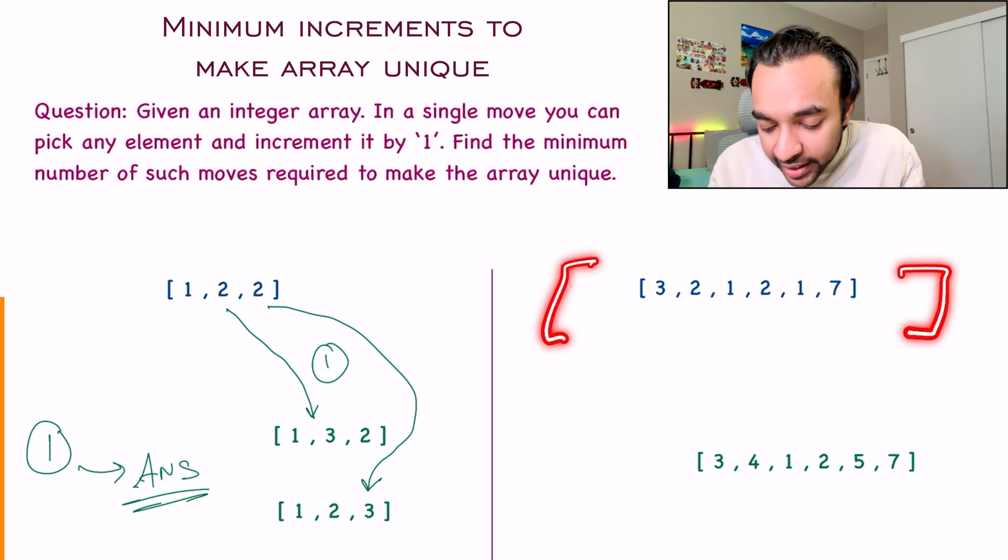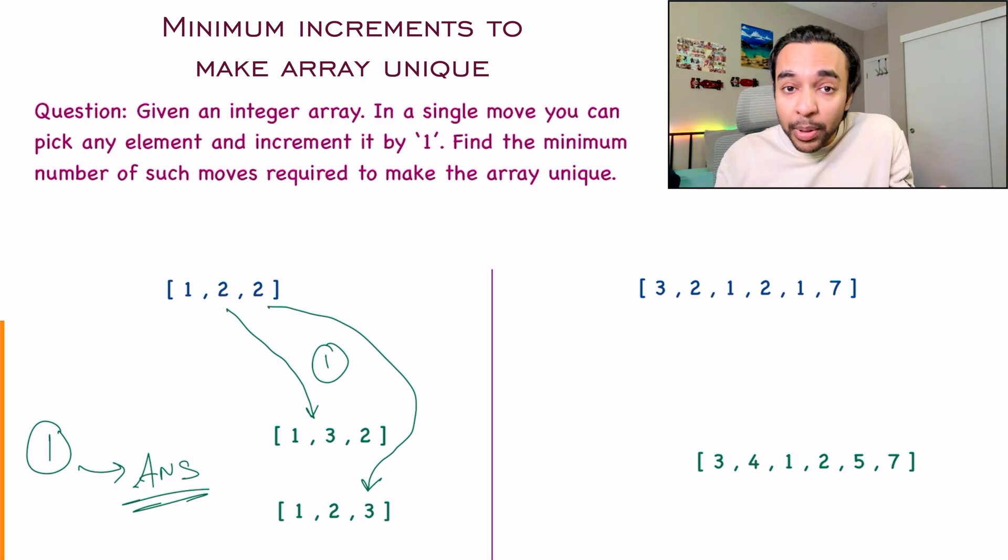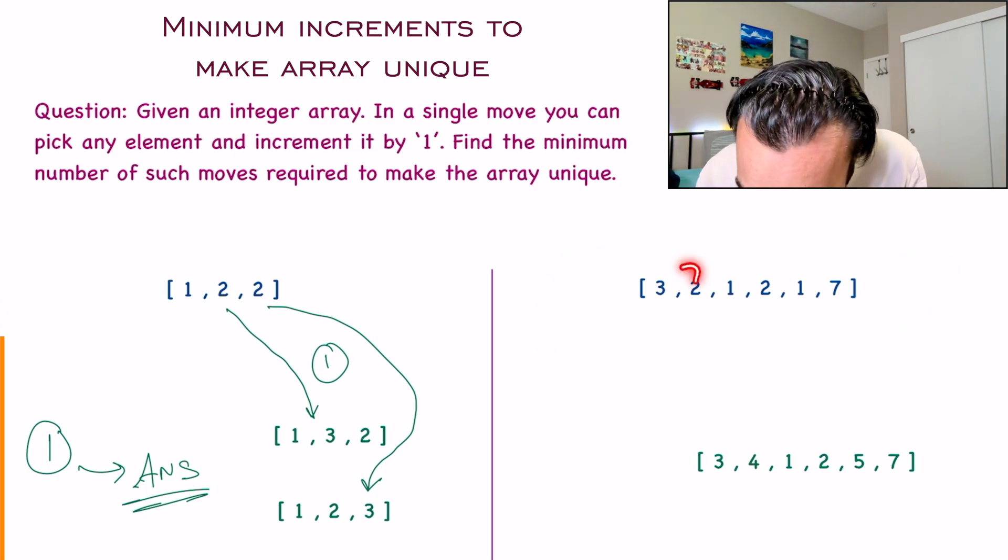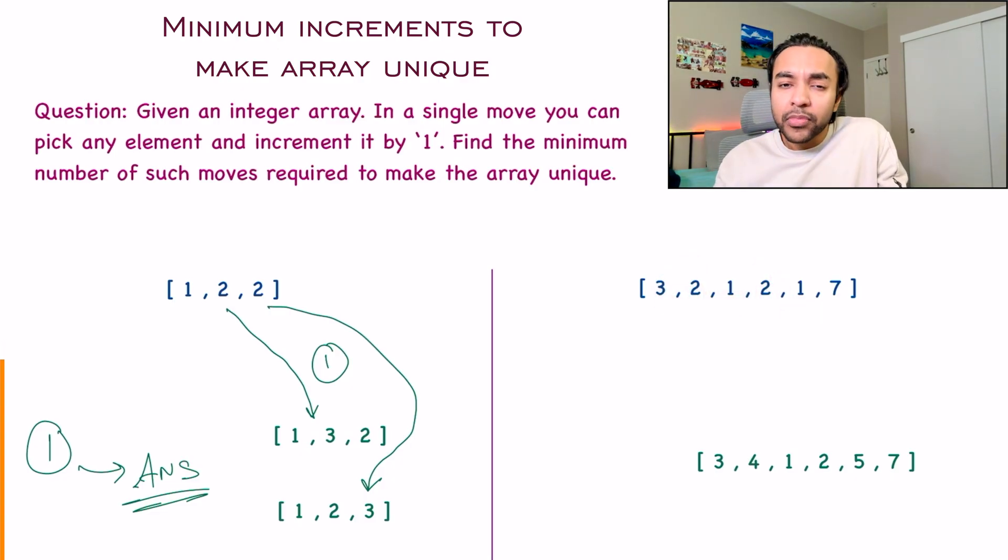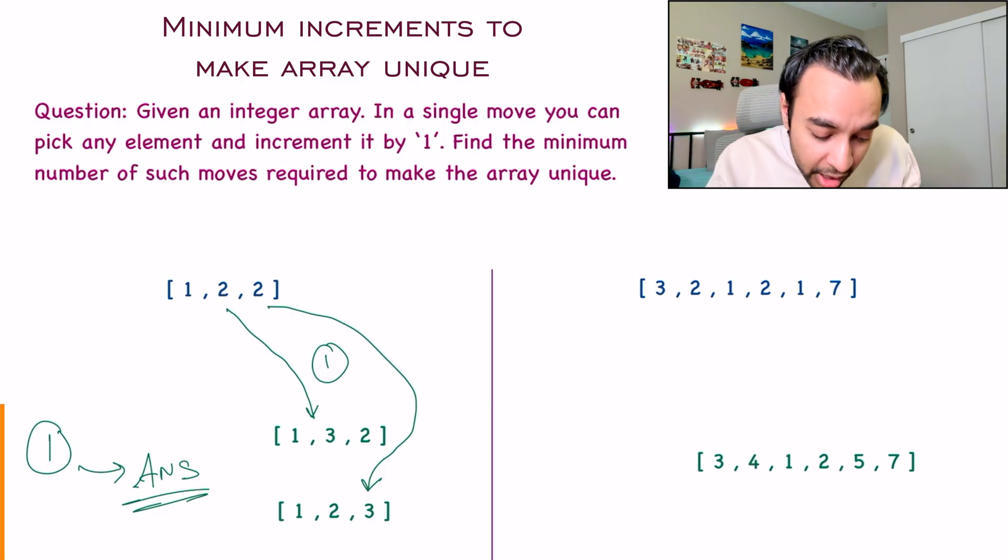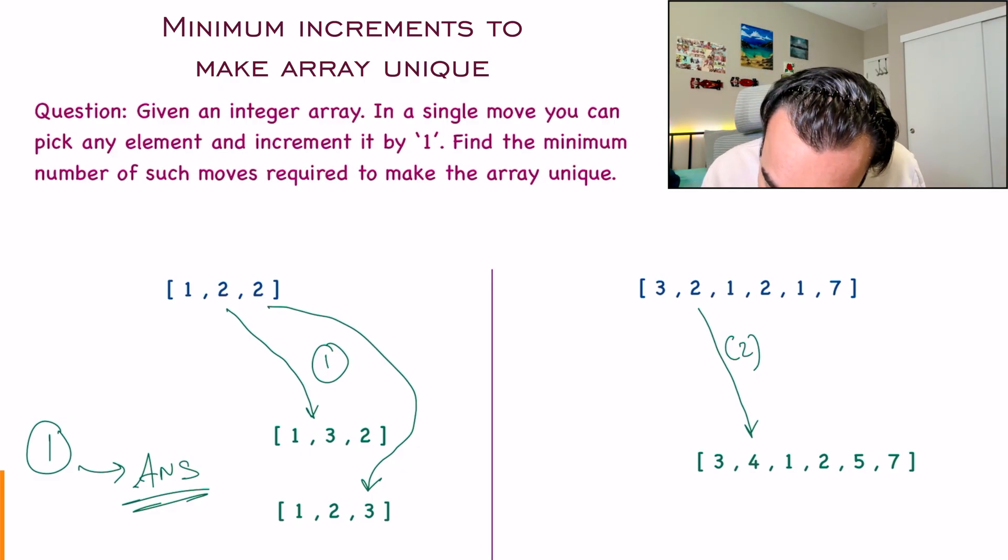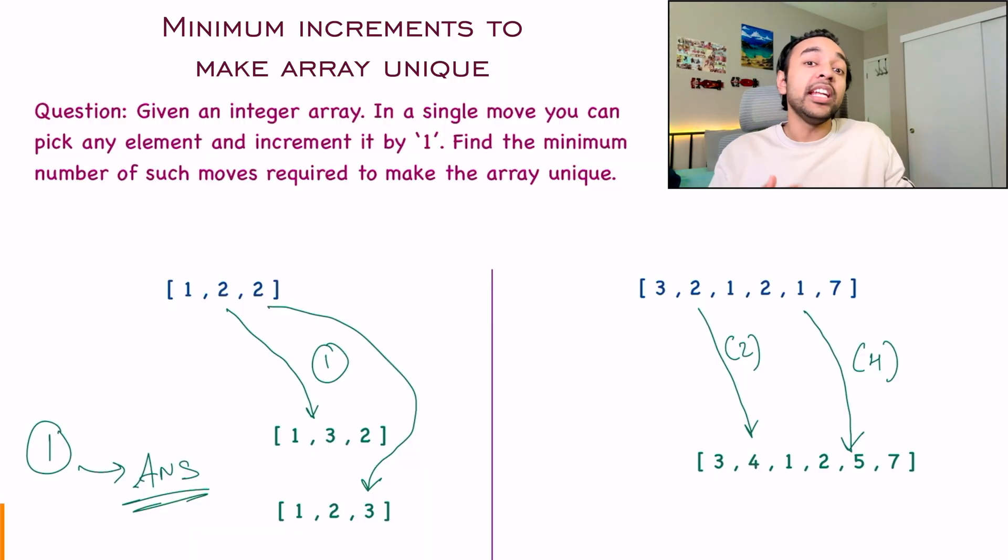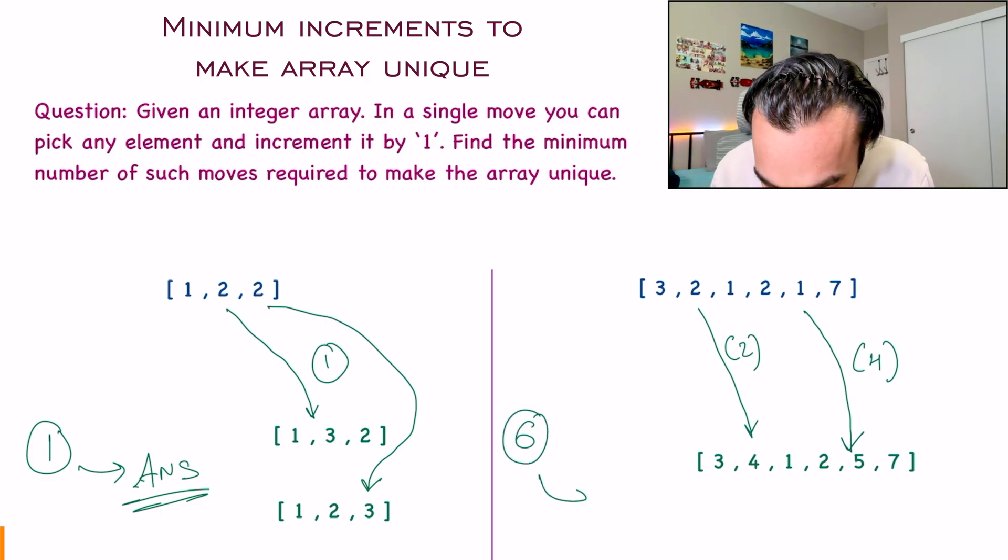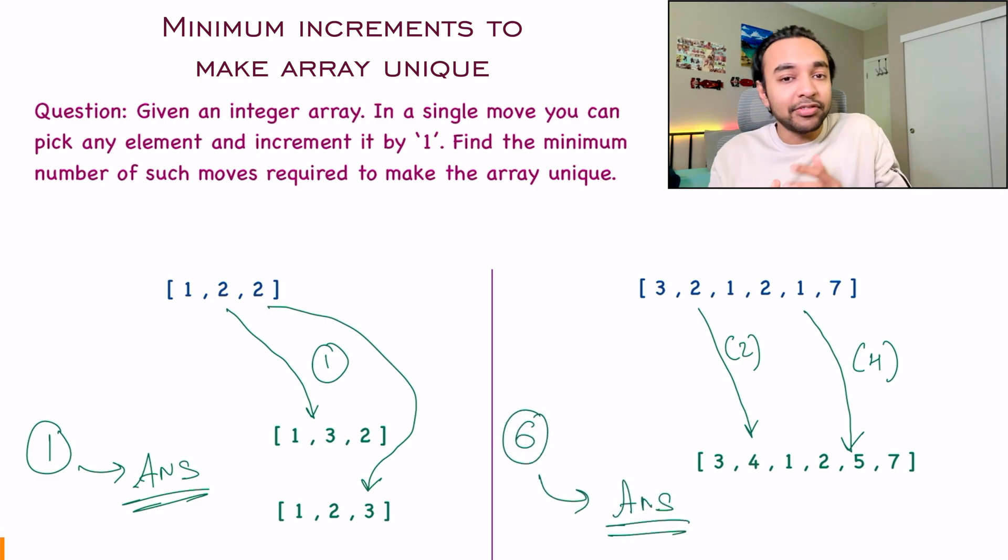Similarly, if you have the second test case, you can see that the array is bigger right now and 2 is repeated and 1 is also repeated. So certainly you'll need to make some increments. To get to an answer, you can increment this 2 to 4, which will be 2 moves because in a single move you can only increment by 1. And you can increment this 1 to 5, that's 4 moves. So the total number of moves required will be 6. For this test case, 6 will be your answer.